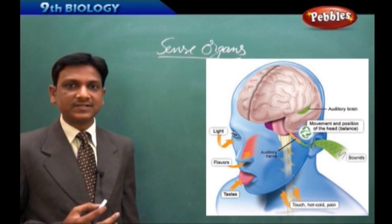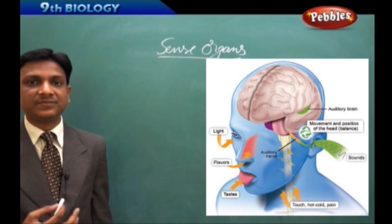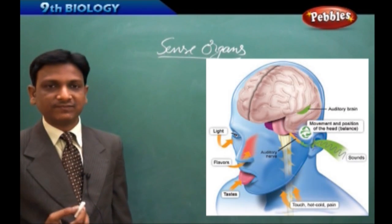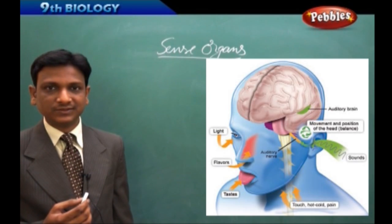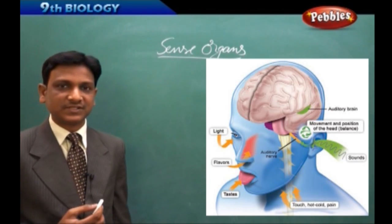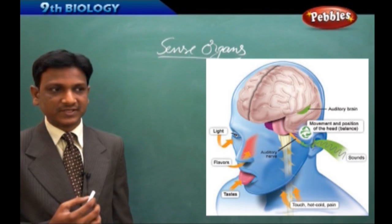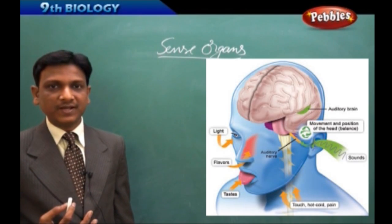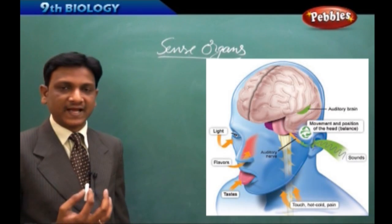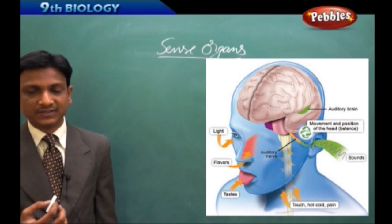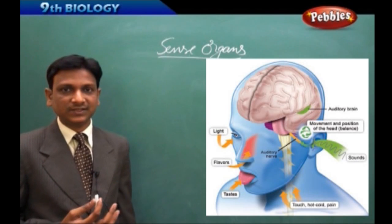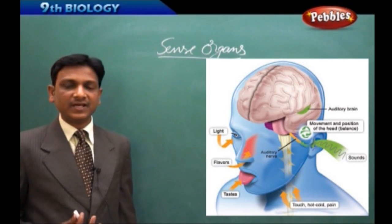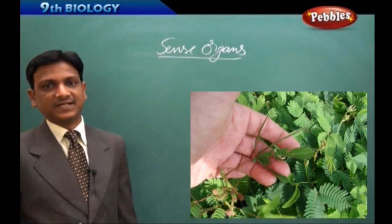In the same way, organisms need sense organs to protect themselves from other organisms. See, if a housefly is flying and you try to catch it, you cannot catch the housefly—it escapes. That means it has good sense organs to escape from your hand. You will be having good brain, good abilities, good skills to catch it, but it is very difficult because it has got more senses to escape from your attack. In the same way, all the organisms have senses.